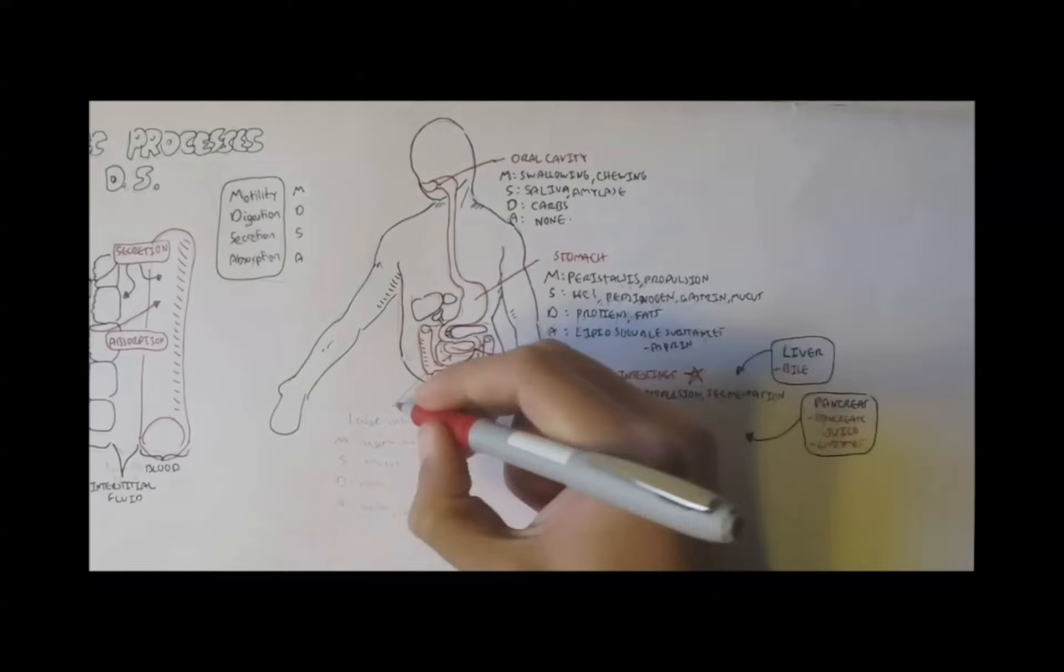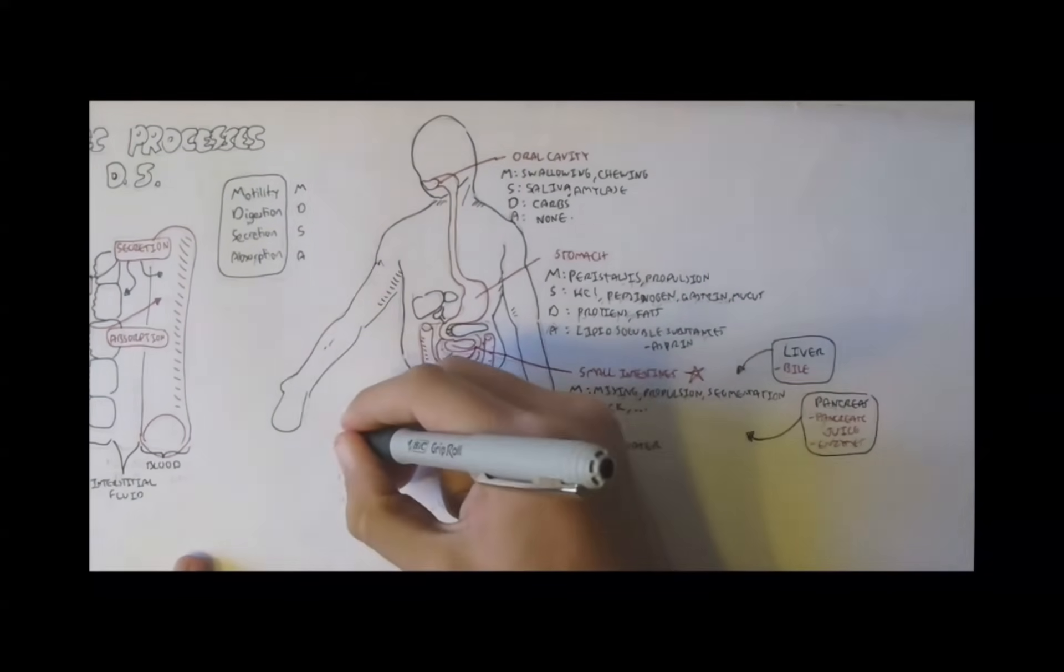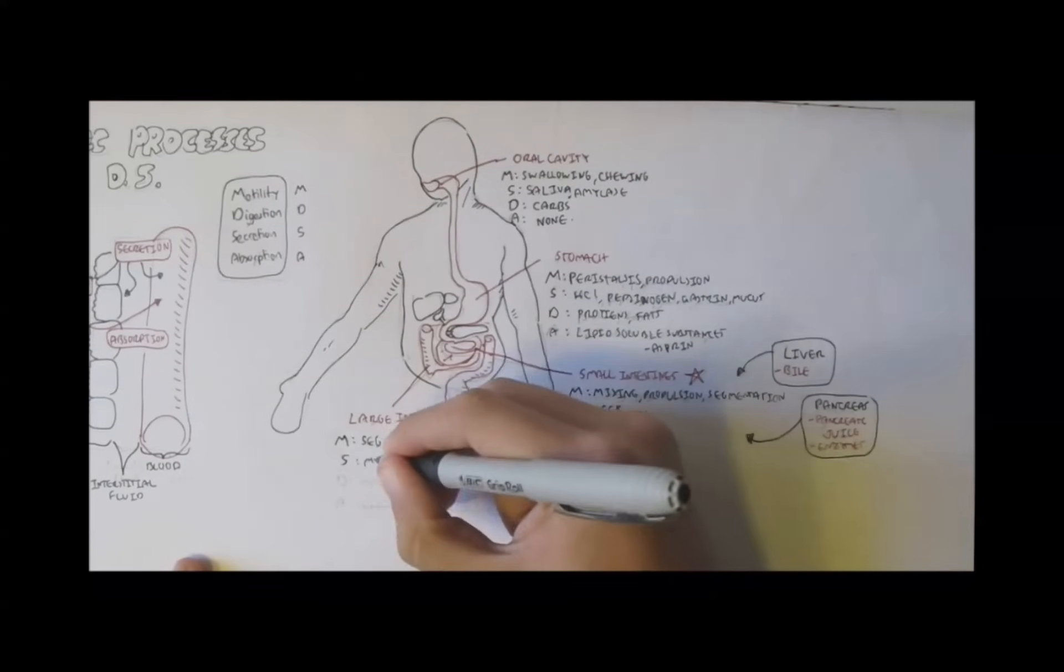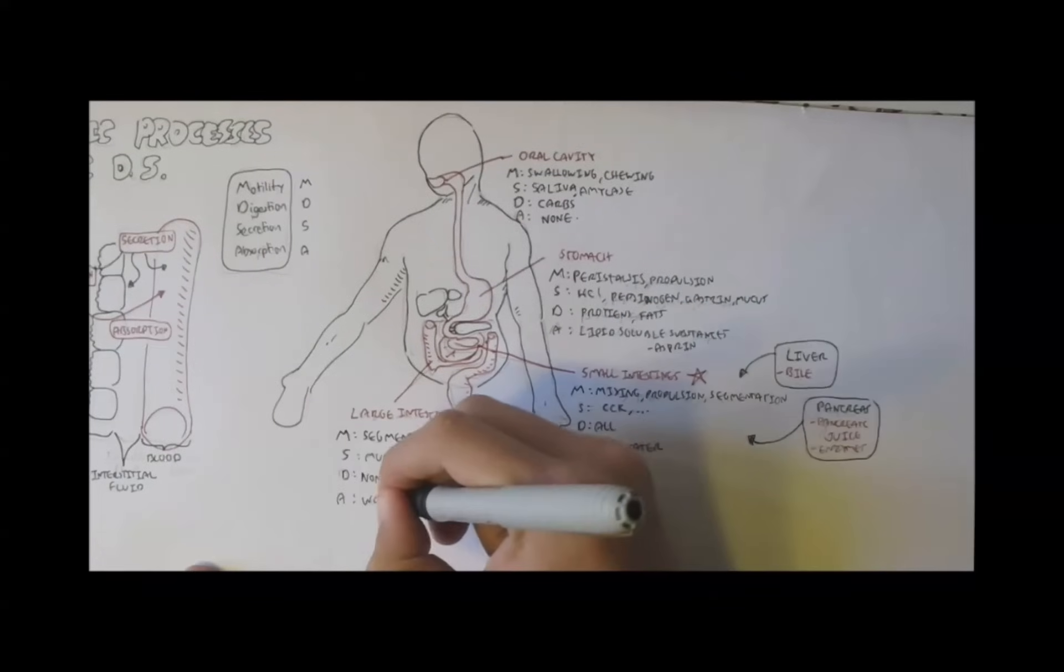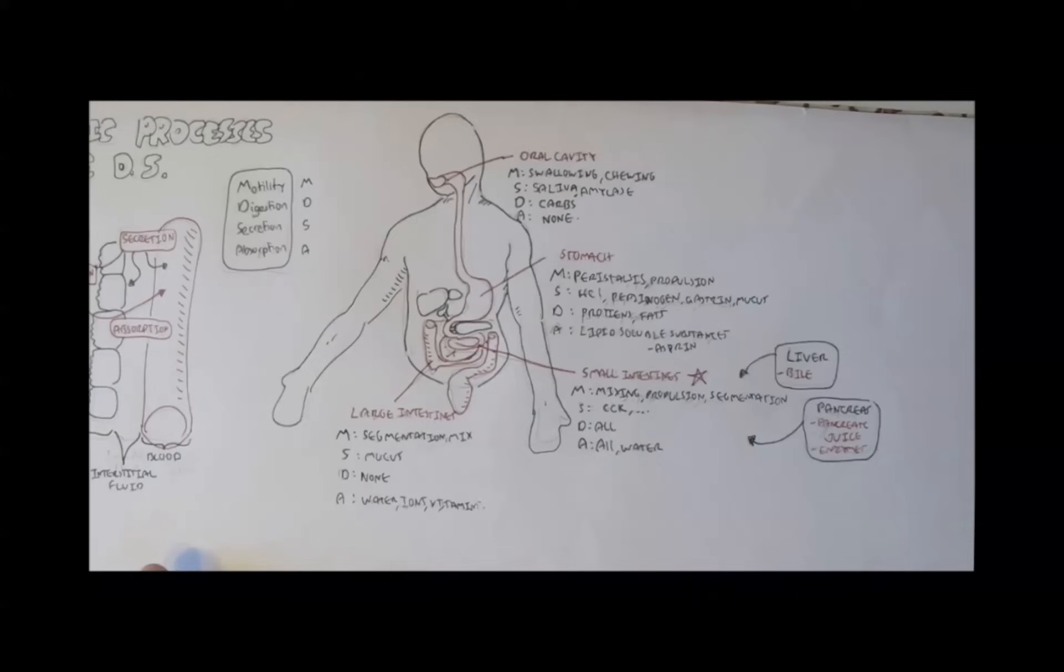Next, we have the large intestines, which doesn't really do that much absorption. The motility is segmentation. It moves through segmentation and mixing. It secretes mucus for protection, digests nothing, and absorbs some water, ions, and vitamins.